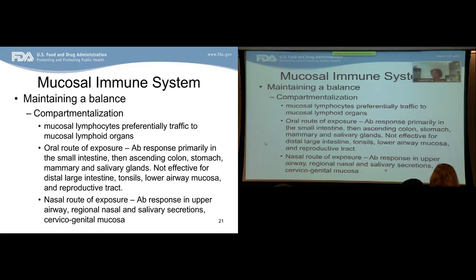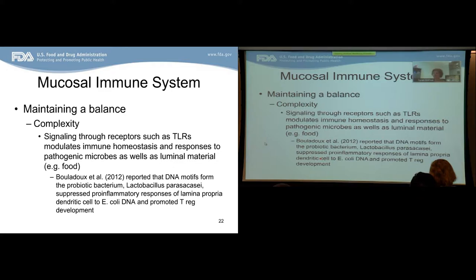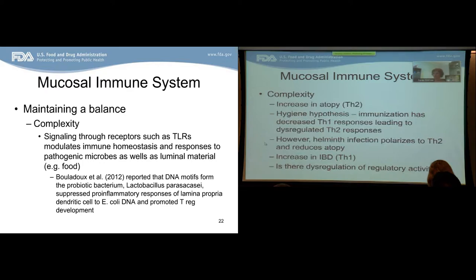Another way the mucosal immune system maintains balance is through toll-like receptors and other immune modulatory molecules, which can modulate homeostasis in responses to pathogenic microbes as well as to luminal materials such as food. A 2012 study by Lizzo reported that DNA motifs from probiotic bacteria such as Lactobacillus paracasei suppress pro-inflammatory responses in lamina propria dendritic cells to E. coli DNA and promote Treg development — illustrating the many layers of context that determine what type of immune response is elicited to any given antigen.